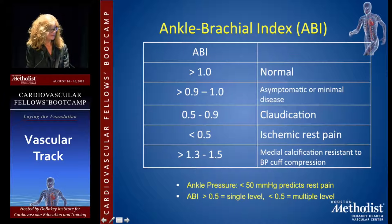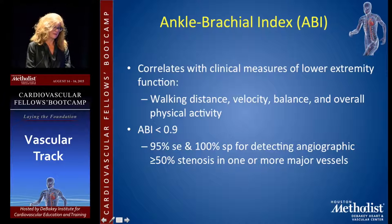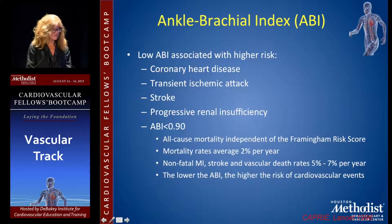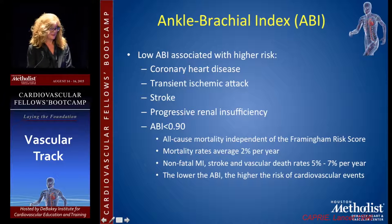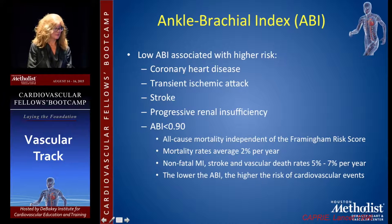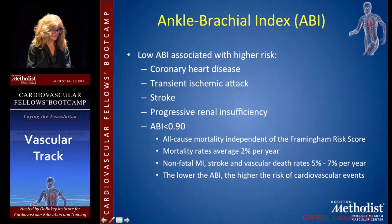If your ABI is 0.8 at the posterior tibial and 0.2 at the dorsalis pedis, you use 0.8. Anyone with an ABI less than 0.9 has peripheral disease by definition. For each degree of stenosis or occlusion, you typically get a drop of 0.3, and the lower the ABI, the worse the disease. An ABI less than 0.9 predicts angiographic findings and correlates with all-cause mortality — average mortality rates of about 2%, plus non-fatal MI, stroke, and vascular death.